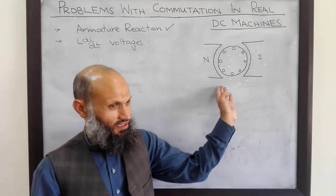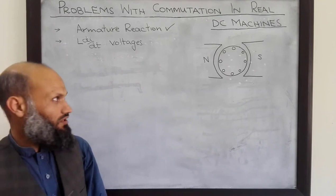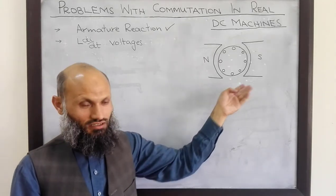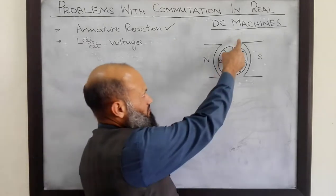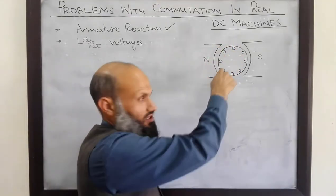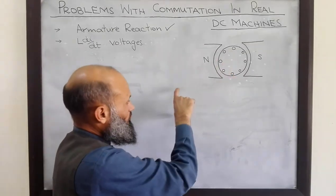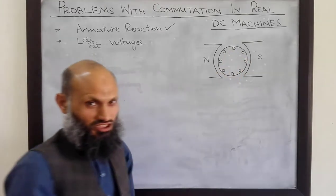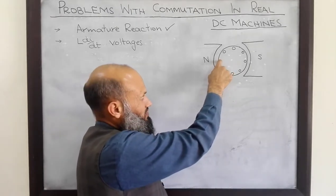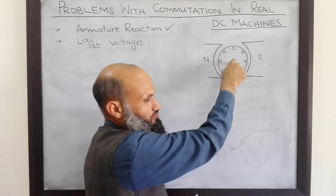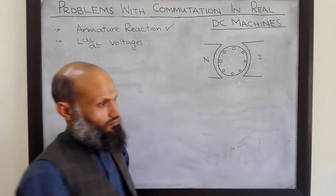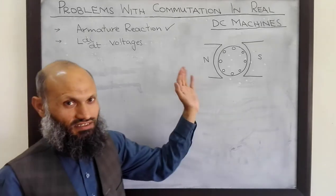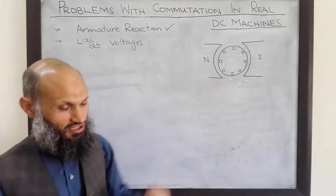When load is connected to this machine, current will start flowing in the coils. In the case of a motor, we connect an external power supply to this machine, and then current starts flowing in the coils through the commutator segments and brush arrangement. That energy supplied by the external power supply gets converted into mechanical energy, which then drives an external mechanical load connected to this machine.